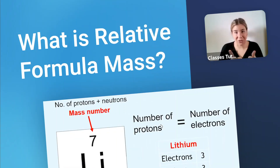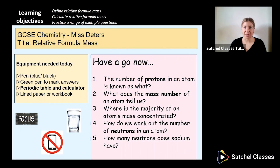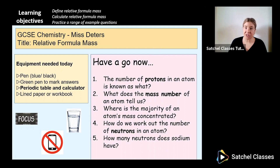Hi everyone and welcome to today's lesson on relative formula mass. This is for the GCSE chemistry. My name's Miss Dieters and the equipment that you need for today is a pen and a scrap bit of paper. Obviously if you're keeping all of your notes organized I suggest you use lined paper or a workbook.